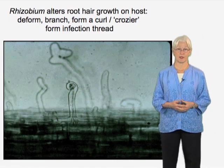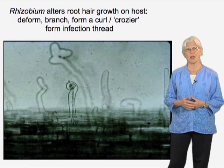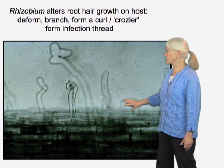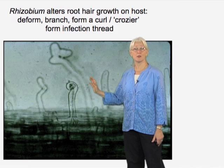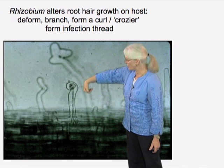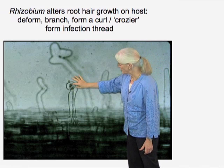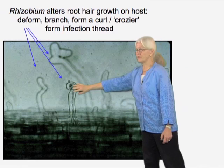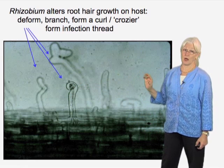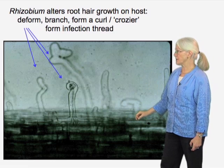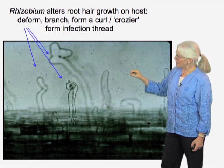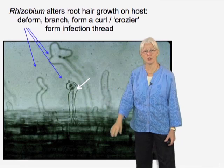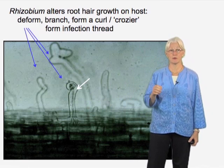Here is another characteristic early event in rhizobium-legume interactions. This shows root hairs on the root of a plant. On the right you can see a normal root hair, which grows straight, and here you see a root hair that has been provoked by rhizobium to grow in such a way that it tops over and forms a curl. Here in the crook is where the bacteria are trapped, and these deformed root hairs are very characteristic of the effect of the correct rhizobium on its compatible host.